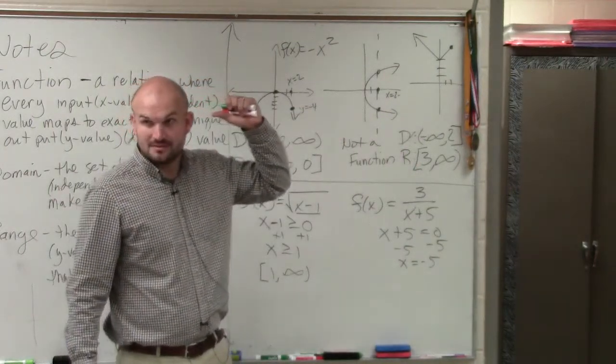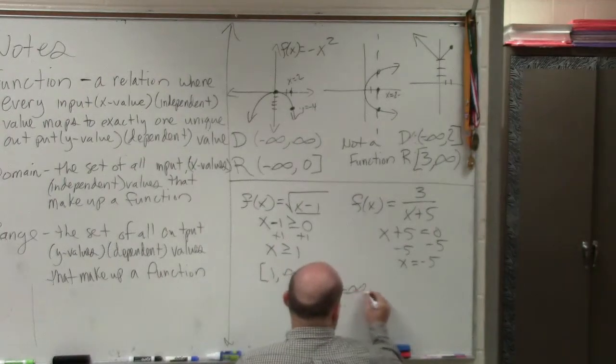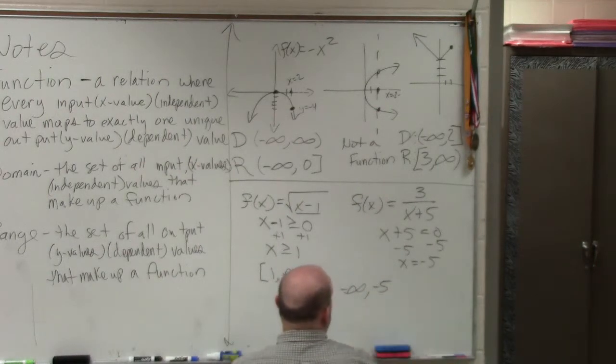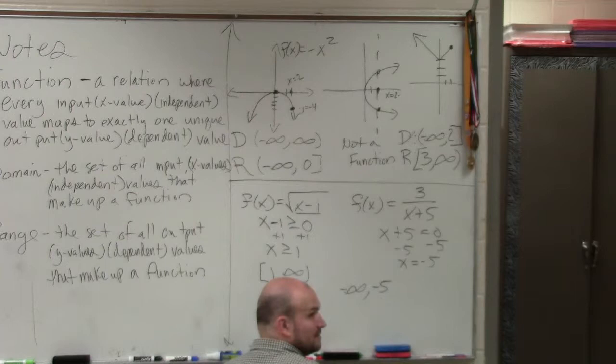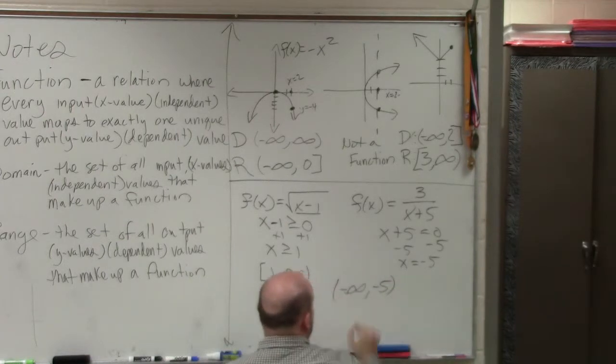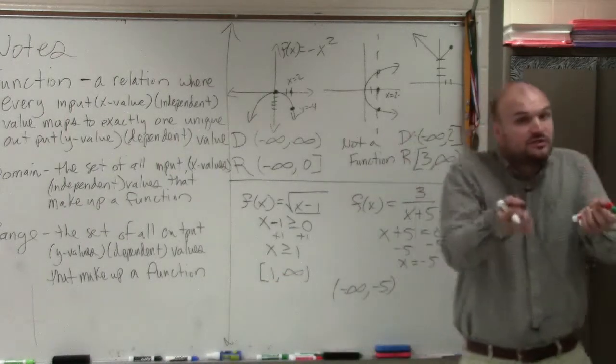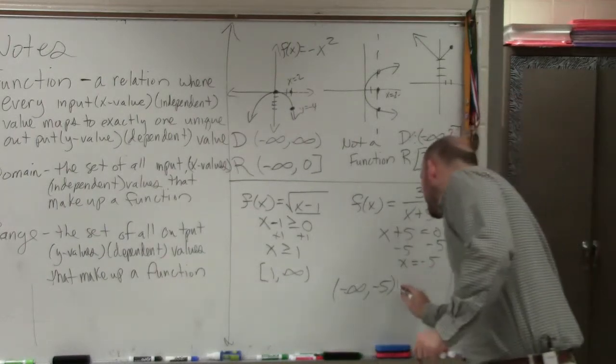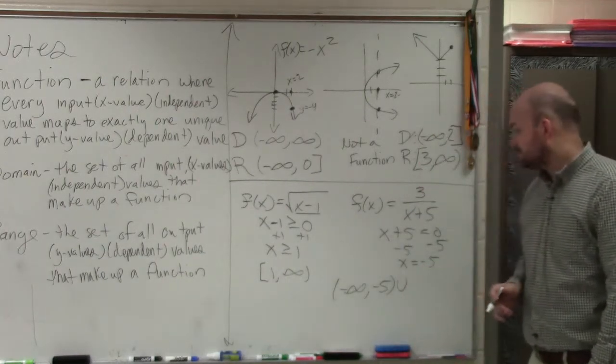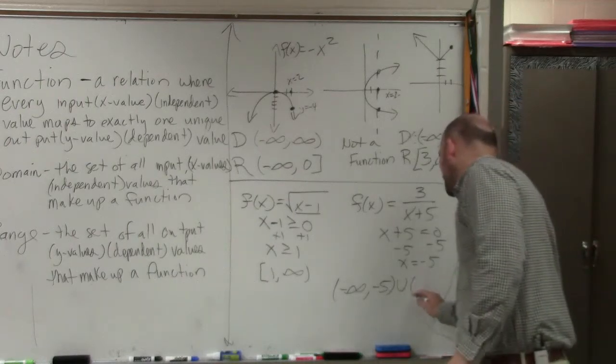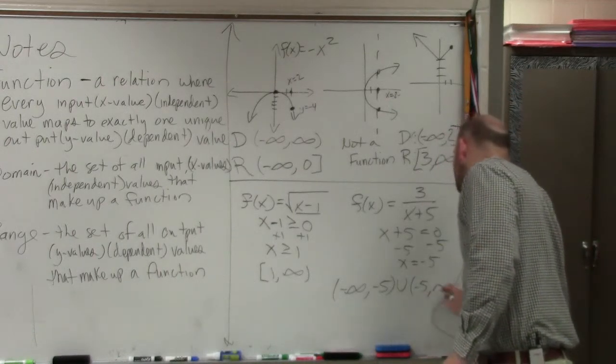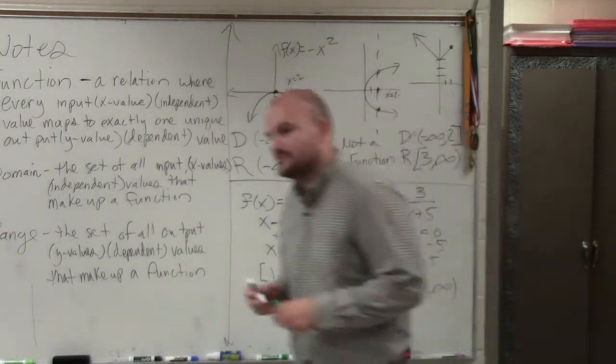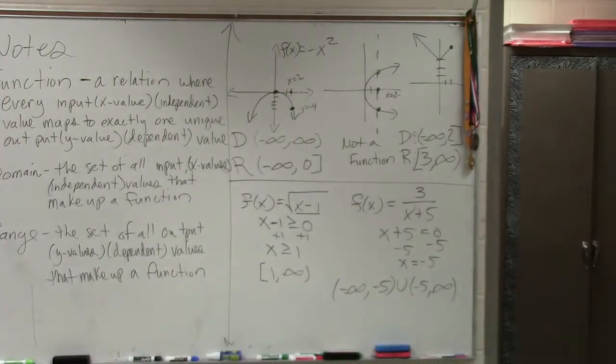OK. So we're going to go from negative infinity to negative 5. But can we use negative 5? No. So therefore, it's a parenthesis. If we could use negative 5, we would use the bracket. Then we have a union, and then we're going to go from negative 5 to infinity. This is notation I'm going to expect you guys to use.